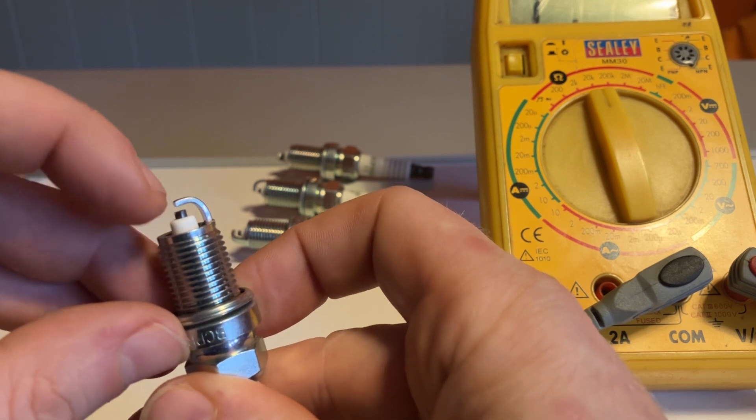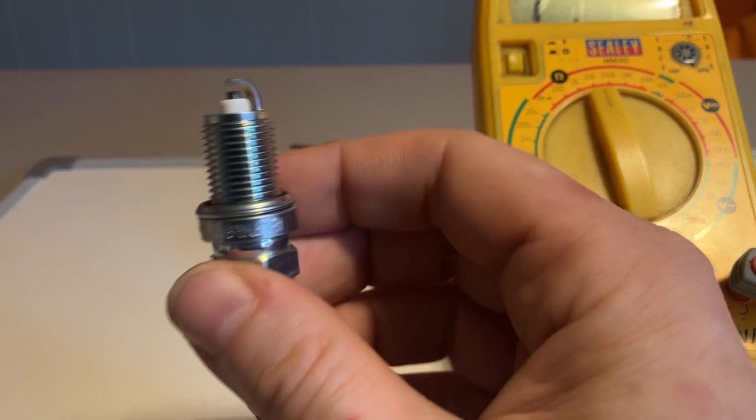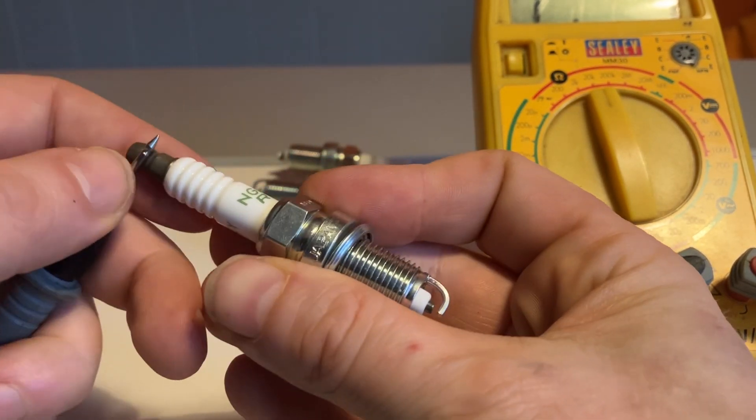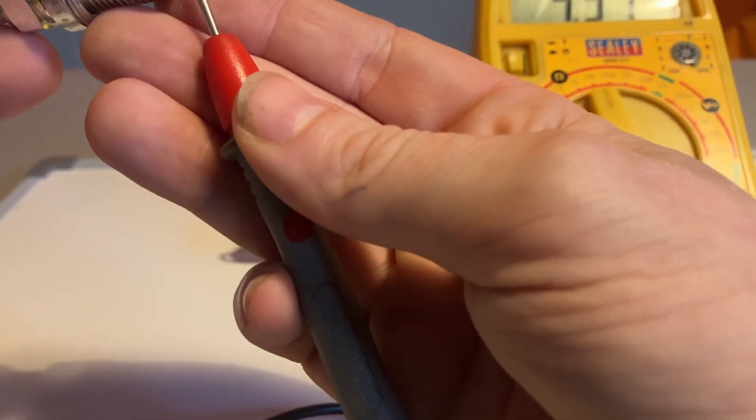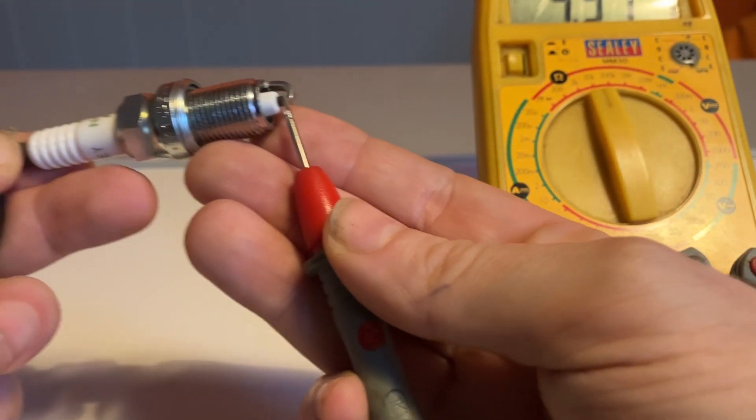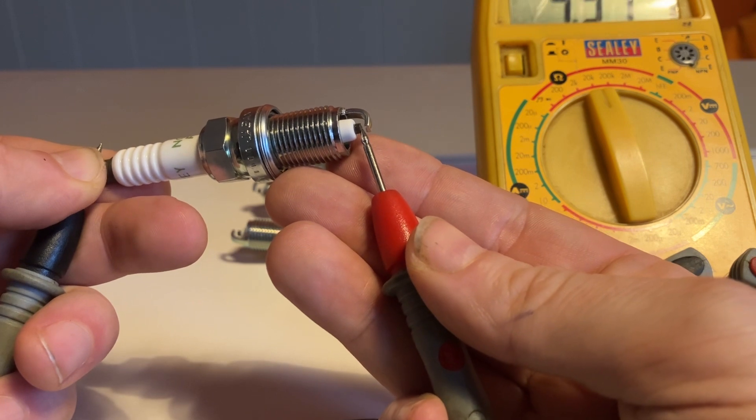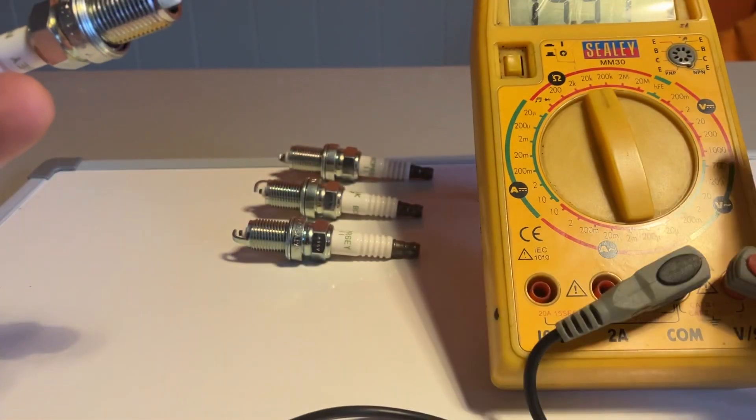So if you're testing for resistance, there should be no resistance between here and here because they shouldn't be linked. There should be two sides of the circuit. So if I want to actually test the insulator and the condition of the spark plug inside, I'll put my earth on that side. It doesn't matter which way around you do the leads technically. And then on the contact tip here, if you can see that there. So I've got one on the back end there and one on the contact tip there.